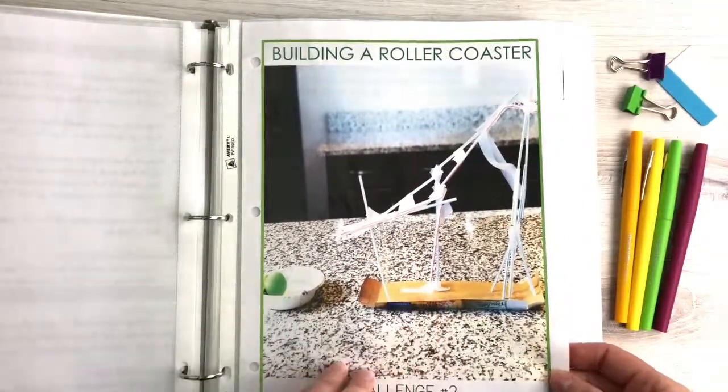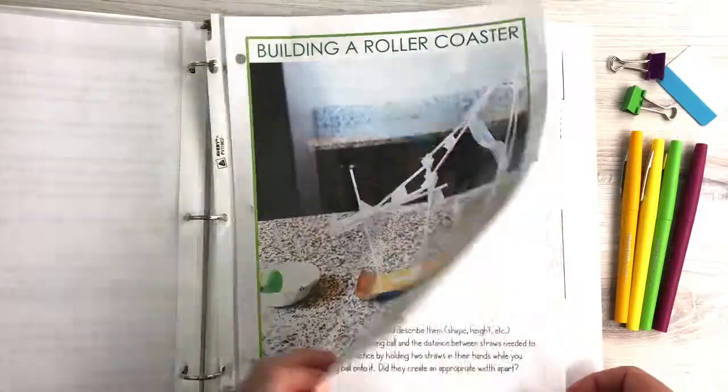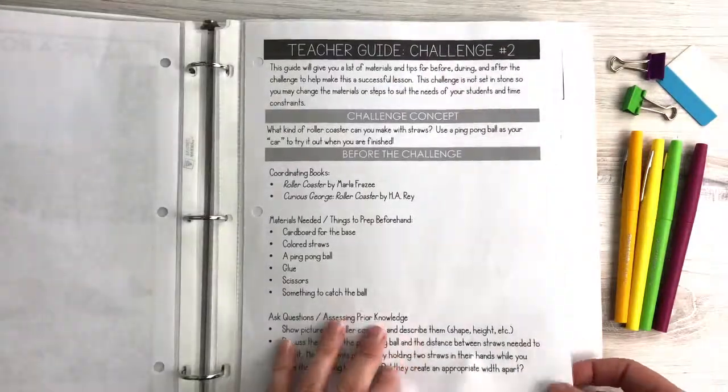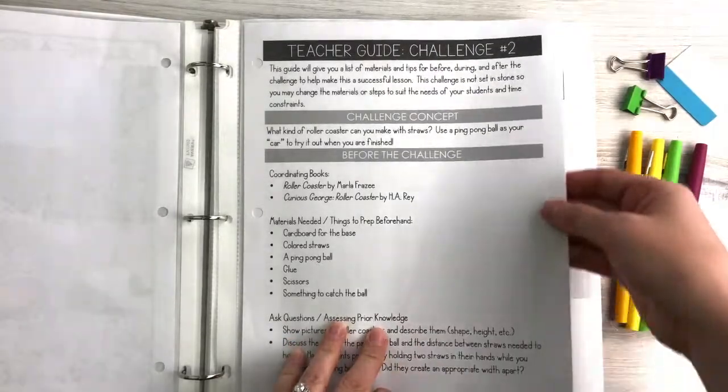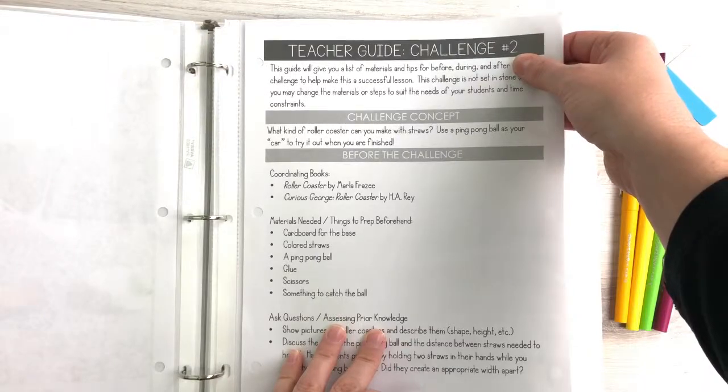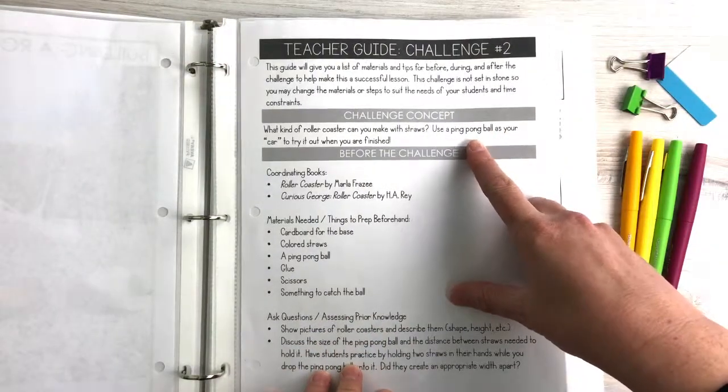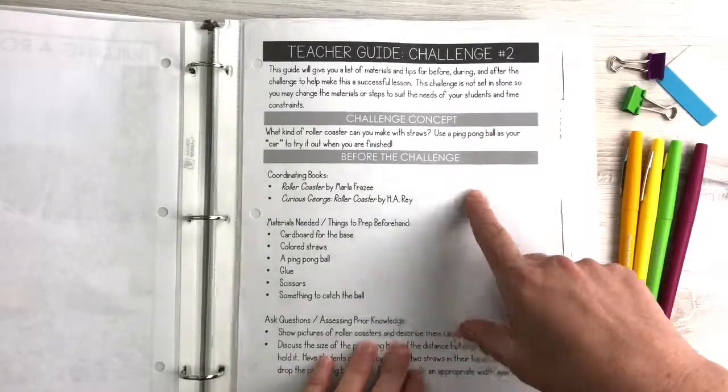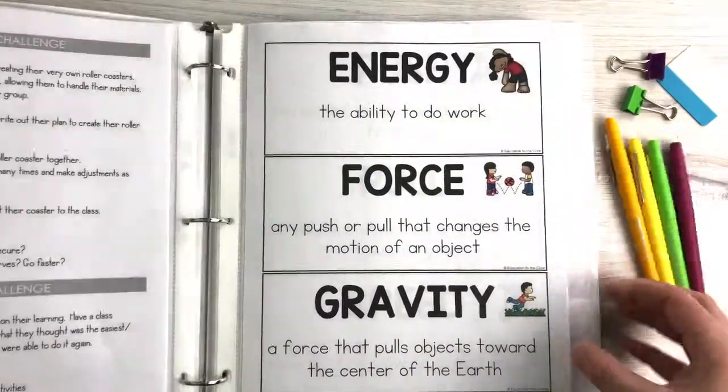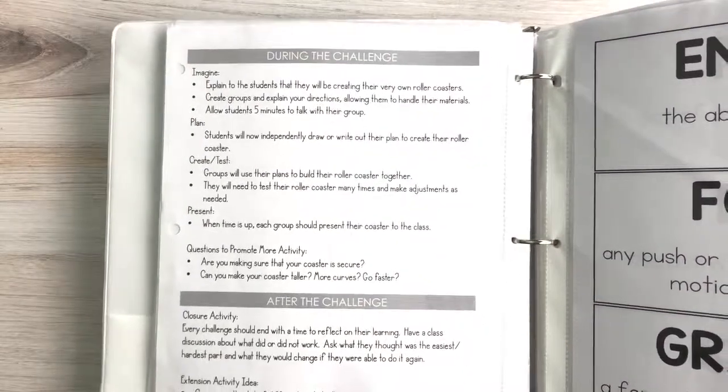At the very beginning you'll have a title page to print out to separate all of your STEM challenges. Once you go into the guide you'll see the teacher guide for the challenge—this is the roller coaster one. You'll see the challenge concept, what to do before the challenge, what to do during the challenge, and then after the challenge.